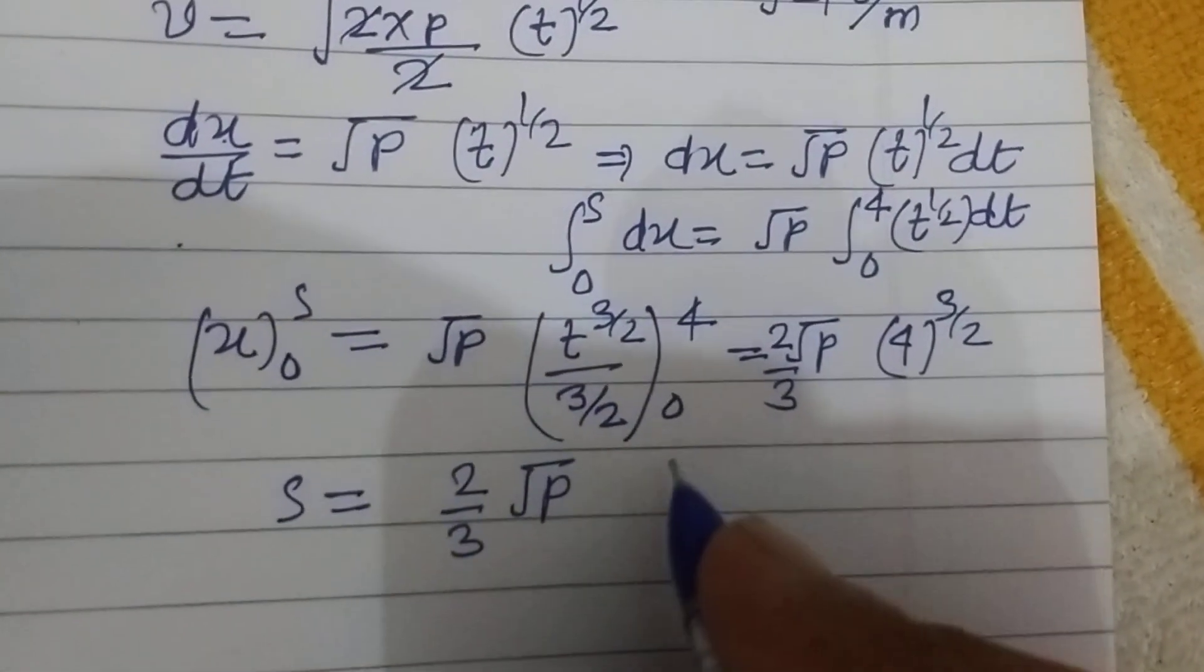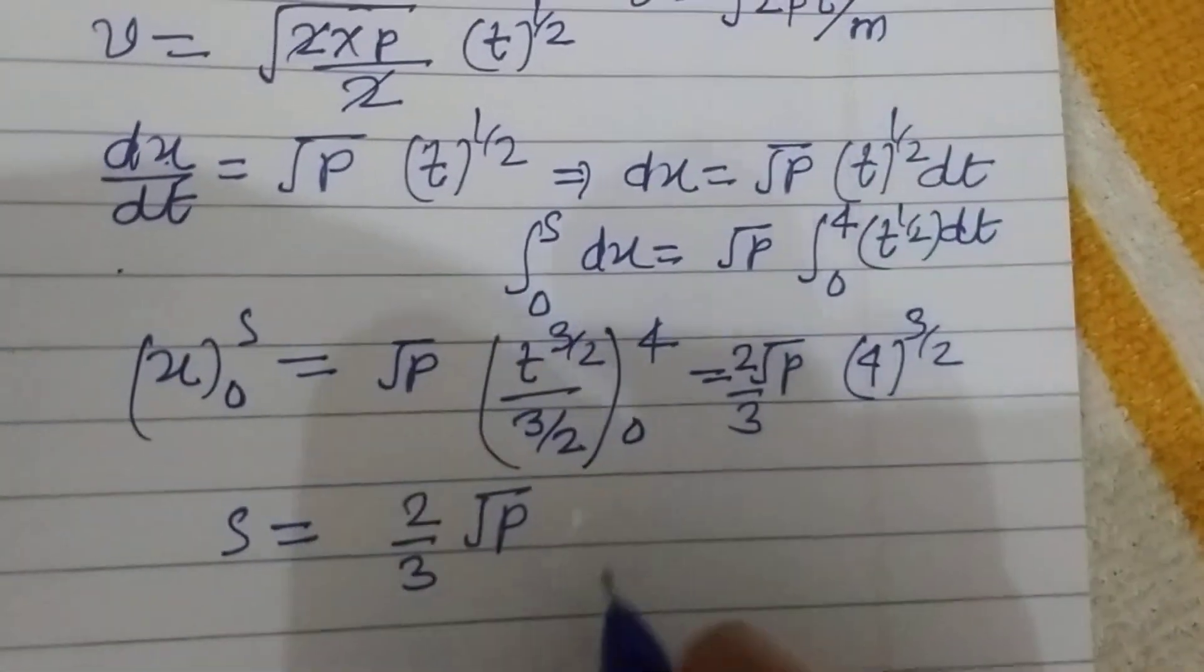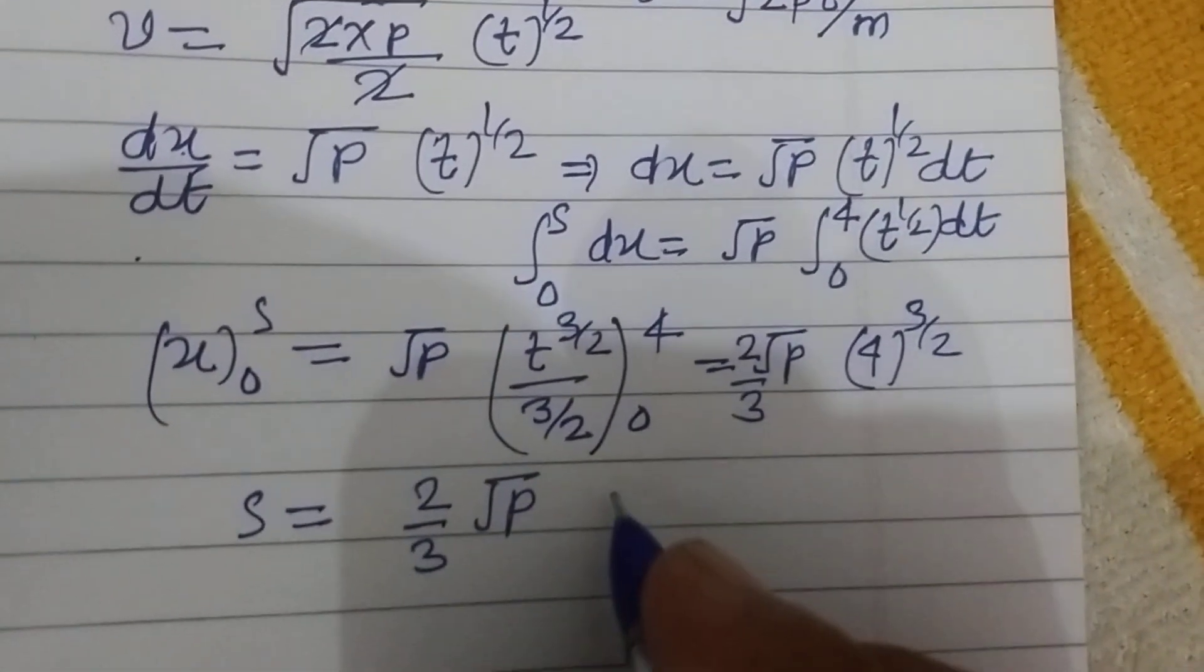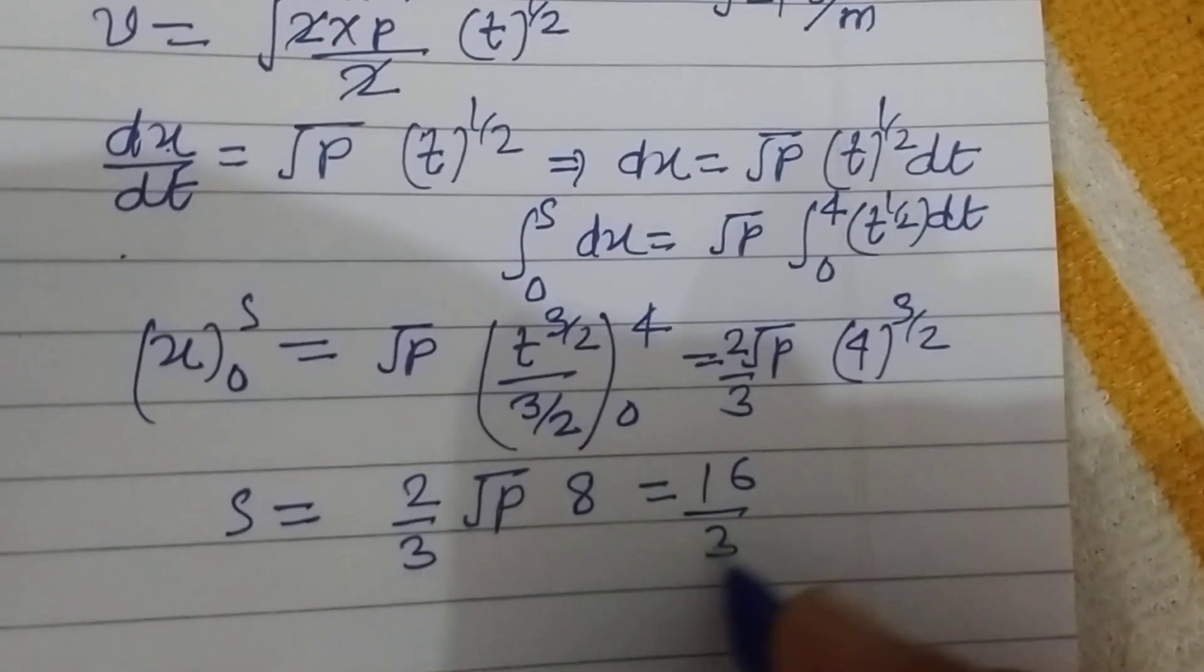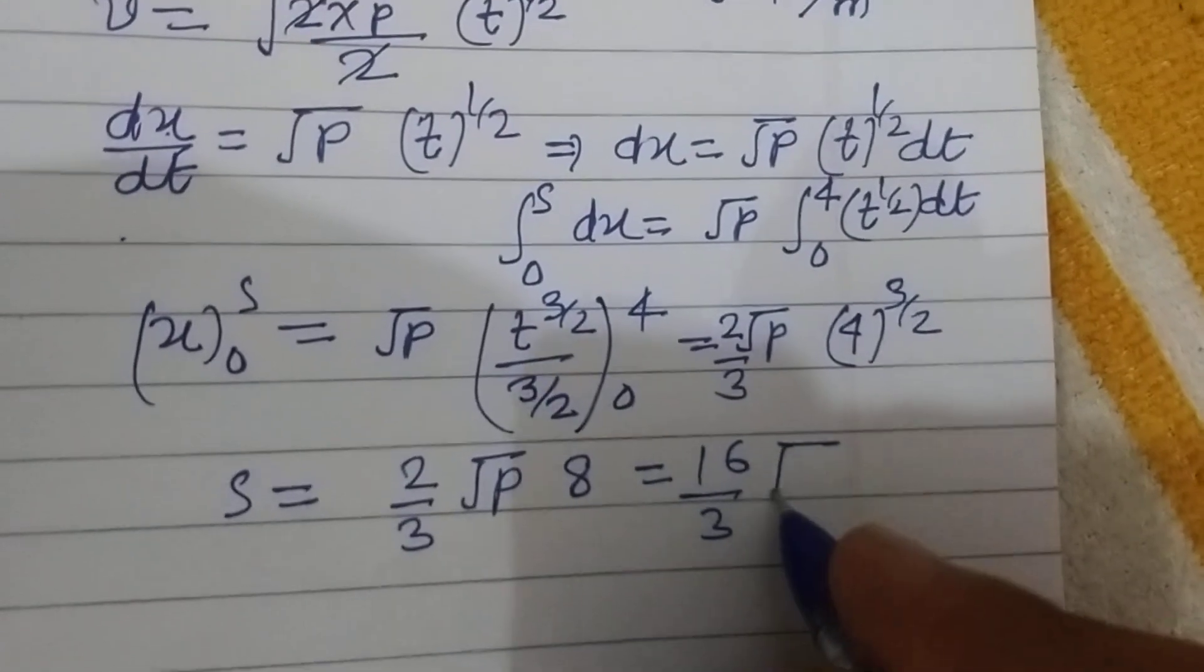4 to the power 3/2 means 2 to the power 3, which is 8. So this is 16/3 square root P.